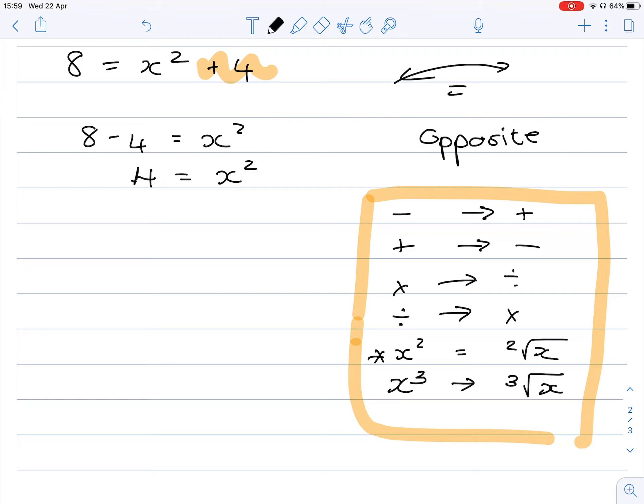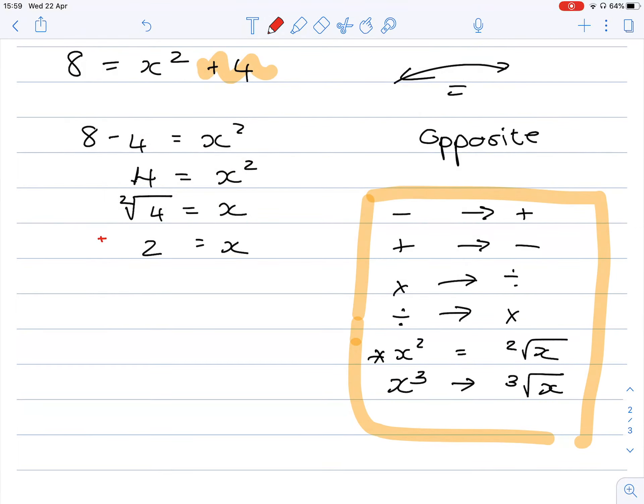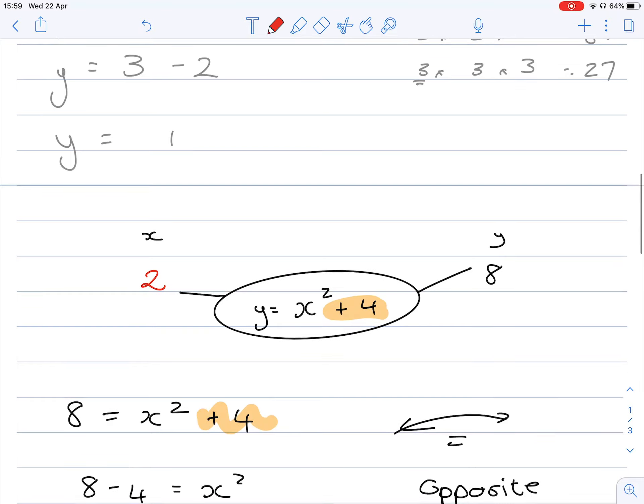The opposite of x squared is square root. So the square root of 4, the 2 doesn't need to be evident there. The square root of 4 is equal to x. So 2 is equal to x. Mathematically, you would need to write the negative or positive value of 2 is equal to x, because we're taking our square roots across. However, in grade 7, this is not needed. So in other words, your input value is then 2.